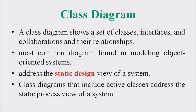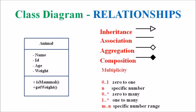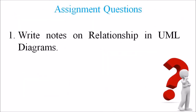In this lecture, we discussed the class diagram associated with UML. A class diagram shows a set of classes, interfaces, collaborations, and their relationships in a particular program. This is the most common diagram found in object-oriented systems. The assignment question is: write notes on the relationships in UML class diagrams.